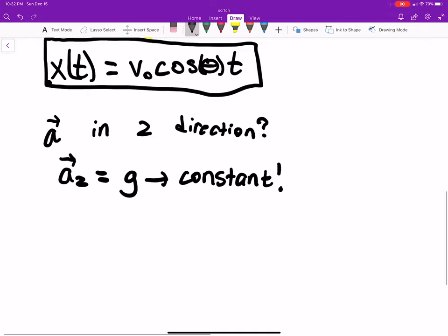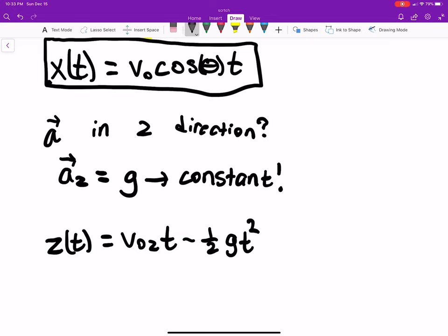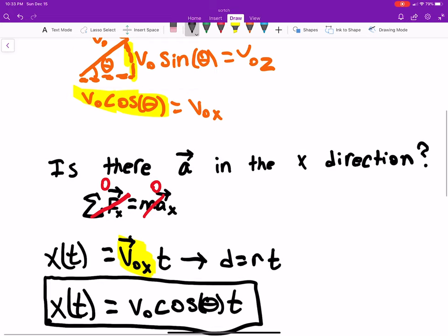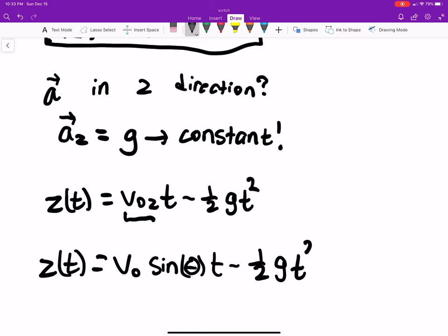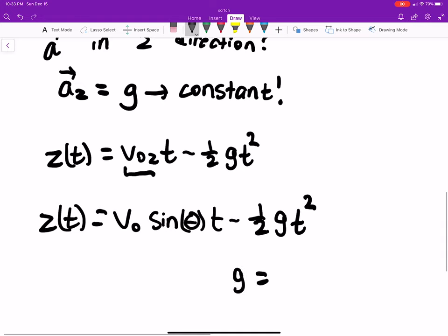So because of that, because it's a constant, we can say that z as a function of time is equal to v naught in the z direction times time minus one half g t squared. It's just our kinematics equation. Now we know what v naught in the z direction is - that is just this. So we can replace this and say z as a function of time is v naught times sine of theta times time minus one half g t squared, where g is equal to 9.81 meters per second squared.